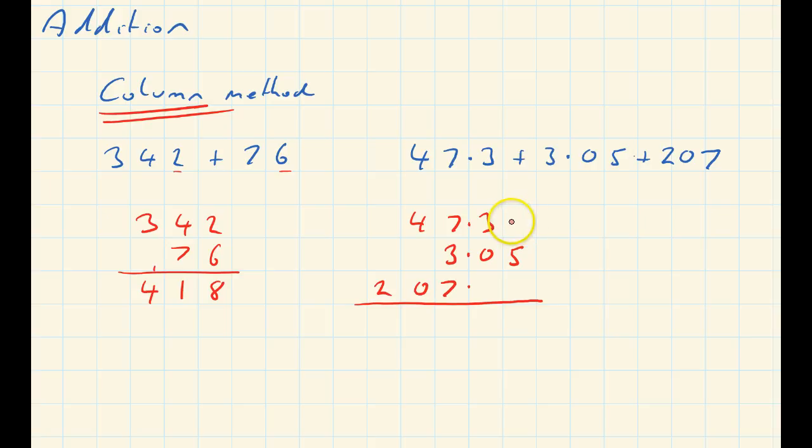I always like putting zeros after the decimal points to make the numbers the same length, it's just easier. Now I can add up the columns. Decimal point must go under decimal point. That'll be 5, that'll be 3.